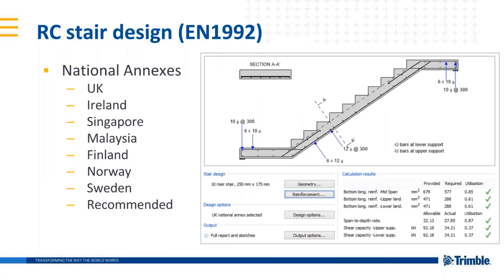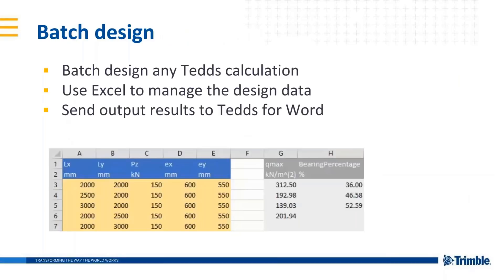In June we released a new Eurocode calculation for designing a straight flight of stairs in reinforced concrete. This calculation has been subsequently updated later in the year to include national annexes for the UK, Ireland, Singapore, Malaysia, Finland, Norway, and Sweden. For all our Eurocode calculations we also include the option to design in accordance with the recommended values, which can make them useful in other countries throughout Europe.